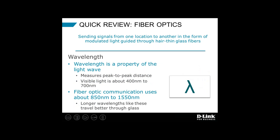I'm also going to be talking about wavelength — a property of the light wave. If you think about a sine wave and measure the peak-to-peak distance, that's the wavelength. Visible light that we can see with our eyes is typically around 400 to 700 nanometers in wavelength. With fiber optic communications, we normally use wavelengths from about 850 nanometers up to about 1550 nanometers, because these longer wavelengths do a better job traveling through a medium like glass. The symbol for wavelength is the Greek letter lambda — you'll quite often see wavelength referred to as lambda.